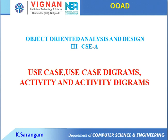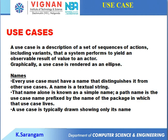Use case diagrams, activity and activity diagrams. A use case is a description of a set of sequences of actions, including variants, that a system performs yielding an observable result of value to an actor. In graphical representation, a use case is rendered as an ellipse symbol.